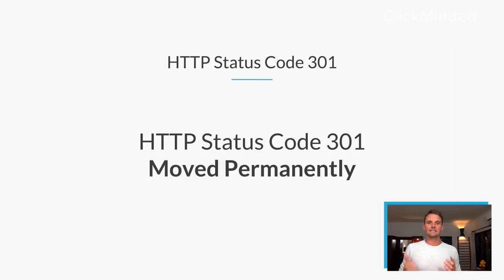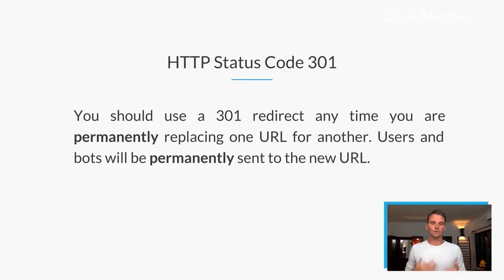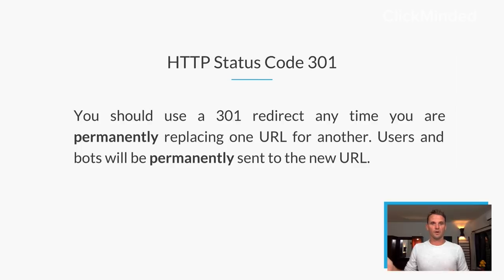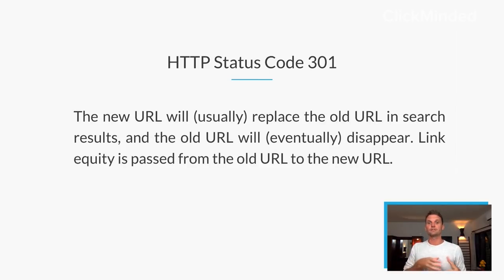Next up is a 301 — this is a Moved Permanently request, also colloquially known as a 301 redirect. It should be used anytime you're permanently replacing a URL with another URL. Users and bots are permanently moved to the new URL. This new URL will usually replace the old URL in search results. Also critically, link equity is passed from the old URL to the new URL. If you've acquired a bunch of links on an old URL and you 301 redirect it to a new URL, you're going to get all that link equity. 301 redirects are usually the redirect of choice anytime you're changing URLs.